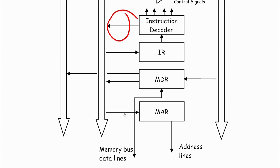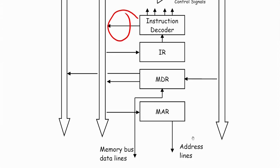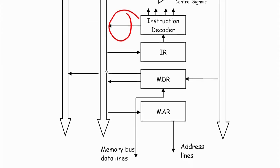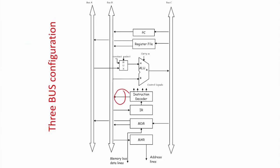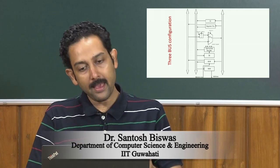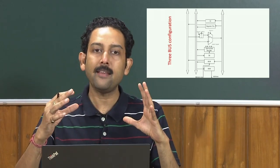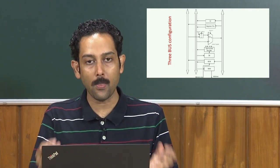Memory address register reads the address from bus B and feeds it to the single memory block — it is a single port because we are assuming a single memory. In this three-bus architecture, slight interconnection changes can easily be done — for example, MAR could read from bus A instead of bus B. But in our examples we will strictly follow this three-bus architecture. We will then see what signals and number of states are required to execute instructions.